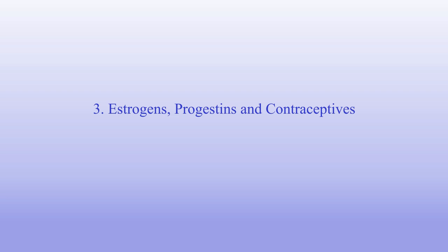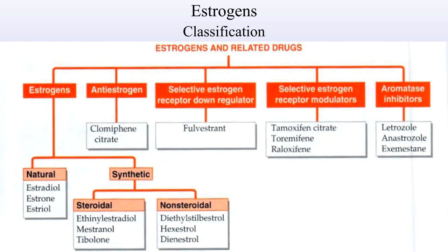The next part of our lecture is estrogens, progestins and contraceptives. Estrogens — classification. First, natural estrogens: estradiol, estrone and estriol. Second, synthetic estrogens: steroidal — ethinyl estradiol, mestranol and tibolone; and non-steroidal — diethylstilbestrol, hexestrol and dienestrol. Anti-estrogen: clomiphene citrate. Selective estrogen receptor down-regulator: fulvestrant. Selective estrogen receptor modulators (SERMs): tamoxifen citrate, toremifene and raloxifene. And aromatase inhibitors: letrozole, anastrozole and exemestane.